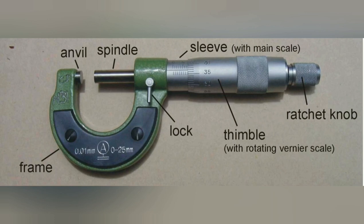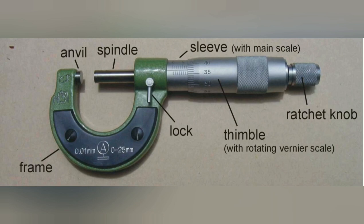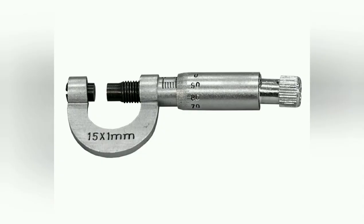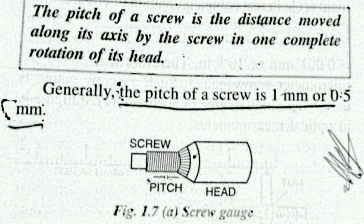Now the description of the screw gauge. In the screw gauge, again we have the main scale which is fixed and not movable. We also have the circular scale — the linear scale — which rotates, so it is movable. Then we have a U-shaped frame and a stud. The spindle passes through a screw. One other important thing in the screw gauge is the pitch of a screw — that is the distance moved after one full rotation of the circular scale.